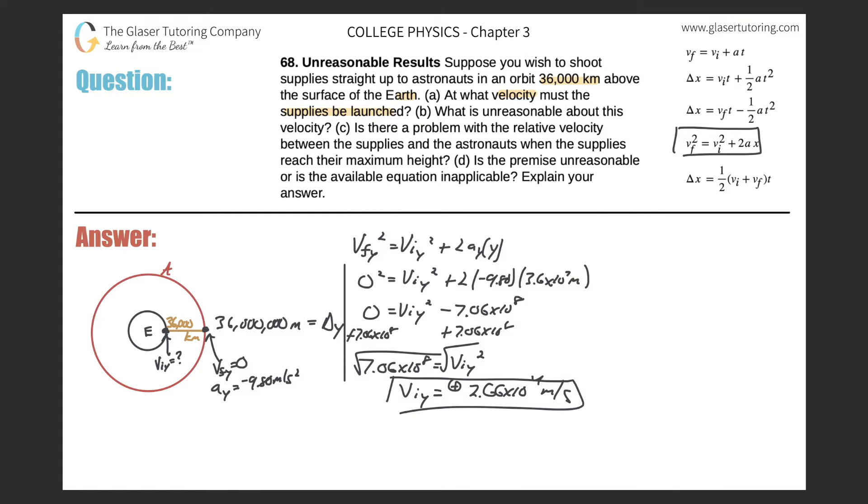All right, so then it says what is unreasonable about this velocity. Well, I mean, it's a large velocity but that's not the problem. The problem is that in terms of our calculation we assumed that our acceleration due to gravity here is constant. That was the assumption, but that assumption is wrong, right? The higher you go, the further from earth's center you go, the gravitational force will decrease.